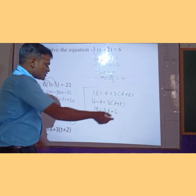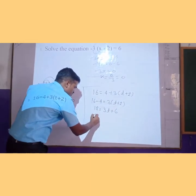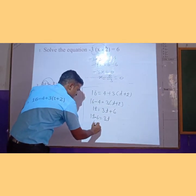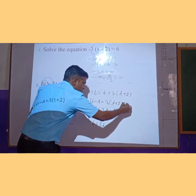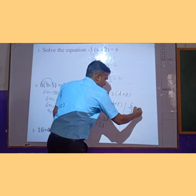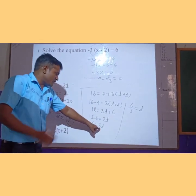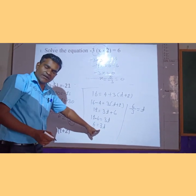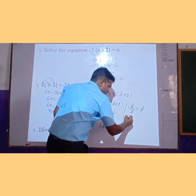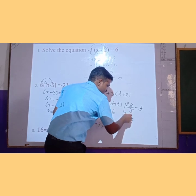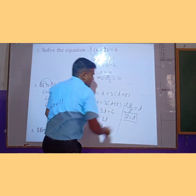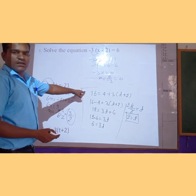We will transpose 6 from right to left. So 12 minus 6 is equal to 3t. That gives us 6 is equal to 3t. To find the value of t, we get t equal to 6 upon 3. When 3 divides 6 it gives 2. So t is equal to 2, which is the solution of the given equation.